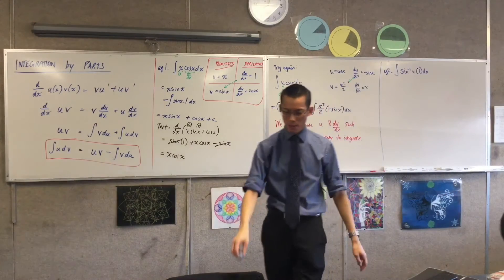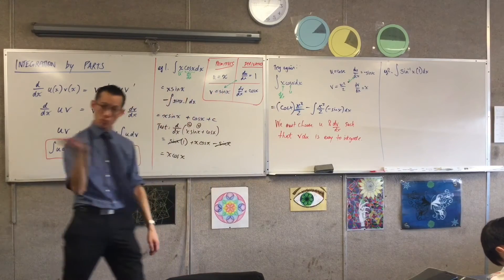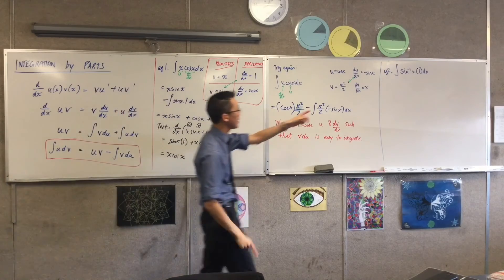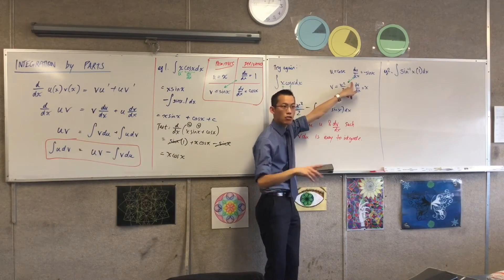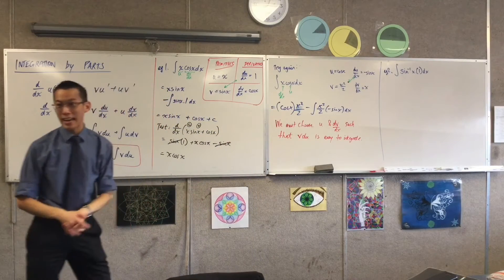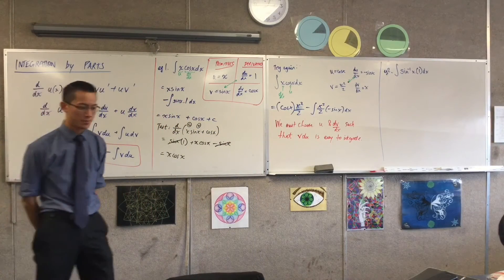So the question then becomes, well, which one do I want to be u? And which one do I want to be dv/dx? Keeping in mind this arrow, this vdu, I want you to try it out. Make a choice. You've got a 50-50 shot. And see if you can get out an integral from the other end. Off you go.